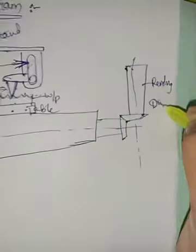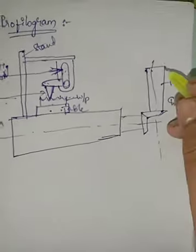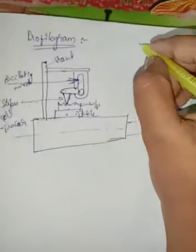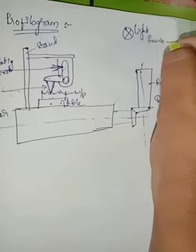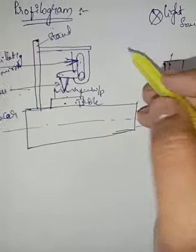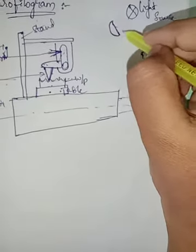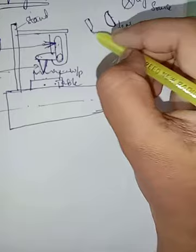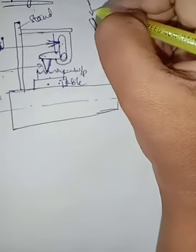This is the main setup of a profilogram. Initially we take a light source, then we have lenses. This is the lens, and this is a precision slit which divides the light into two parts.